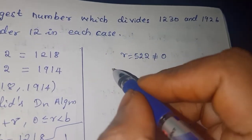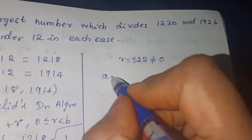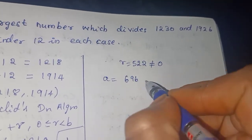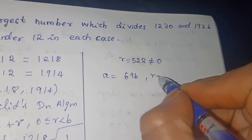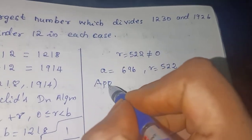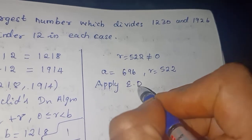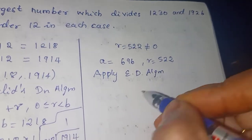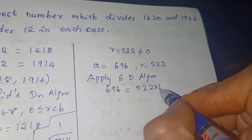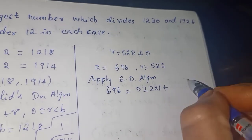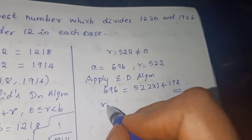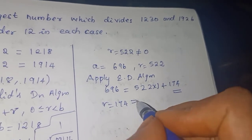Now A becomes 696 and B becomes 522. Applying Euclid's Division Algorithm again: 696 = 522 × 1 + 174. The remainder is 174, which is not equal to 0, so we continue.